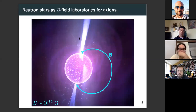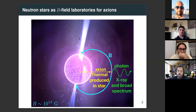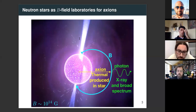I want to convince you that indirect searches, in particular in the x-ray and radio bands, can play an important role in covering the possible parameter space where new physics could show up. The key reason I'm thinking about neutron stars is that they have really strong magnetic fields — on the order of 10 to the 14 Gauss — the strongest stable magnetic fields in the universe. Axions can convert into photons in the presence of magnetic fields, and this allows axions to convert at a relatively high rate.